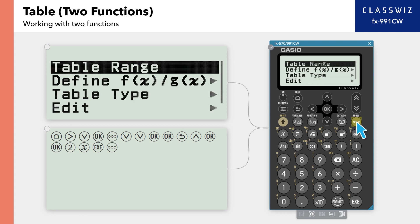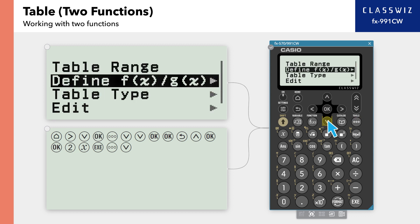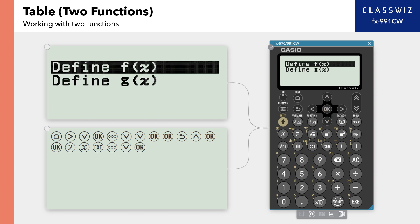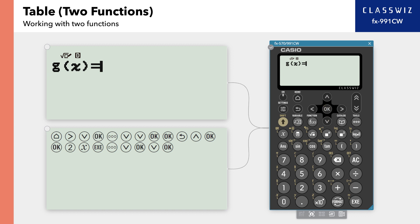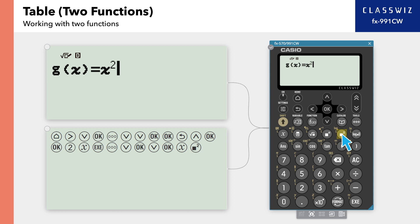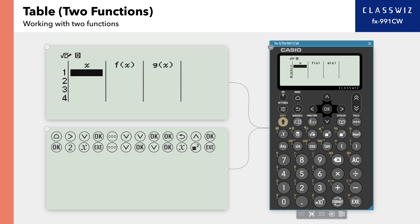Press Tools to select Define FX and GX. Now, let's select Define GX. We want to enter the second function here. This time, let's enter GX equals X squared. Press the X and squared buttons to enter X squared. Press Execute to return to the table screen.